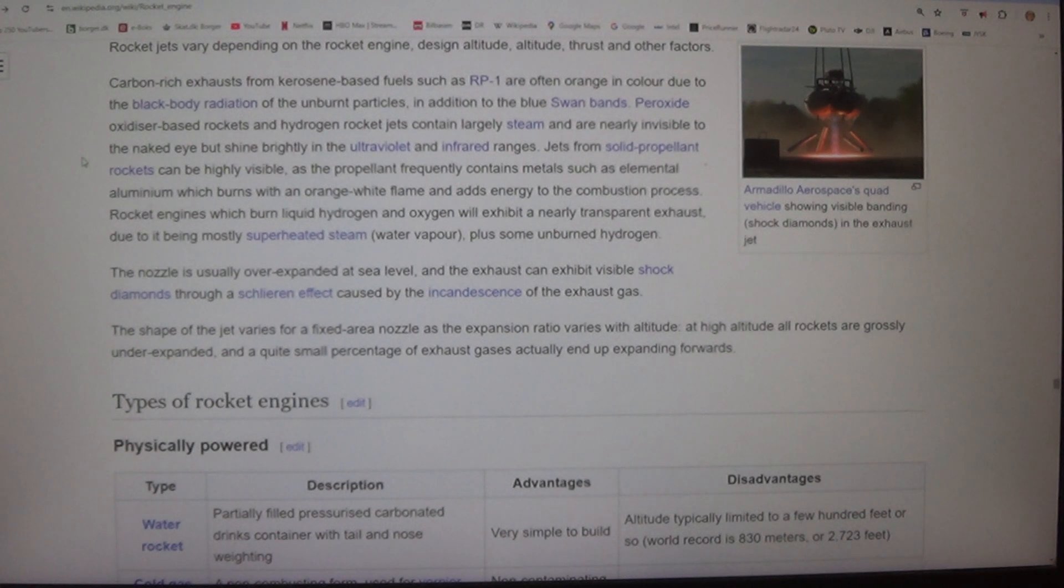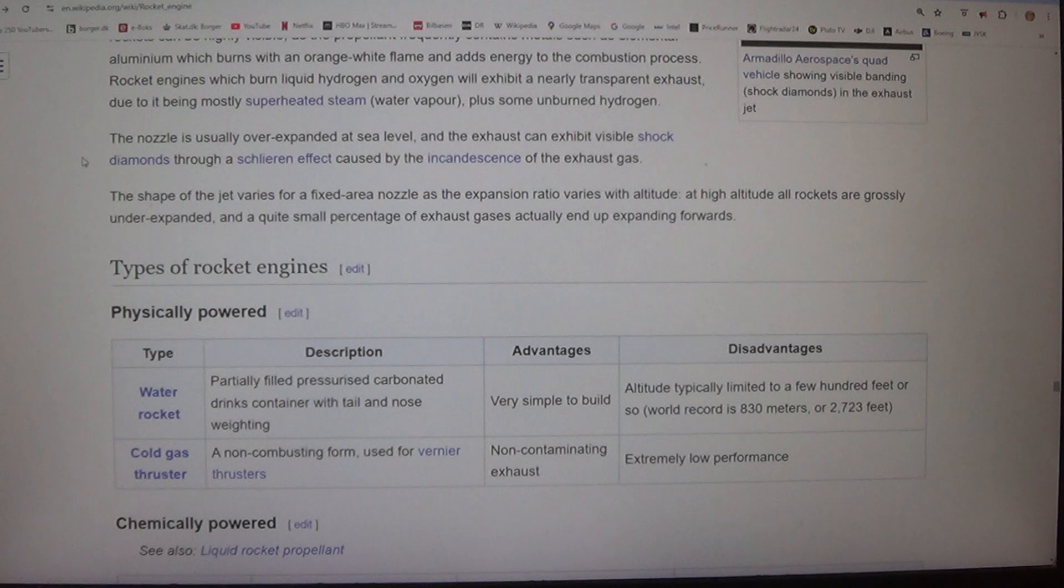Rocket engines which burn liquid hydrogen and oxygen will exhibit a nearly transparent exhaust, due to it being mostly superheated steam (water vapor), plus some unburned hydrogen. The nozzle is usually over-expanded at sea level, and the exhaust can exhibit visible shock diamonds through a Schlieren effect caused by the incandescence of the exhaust gas.